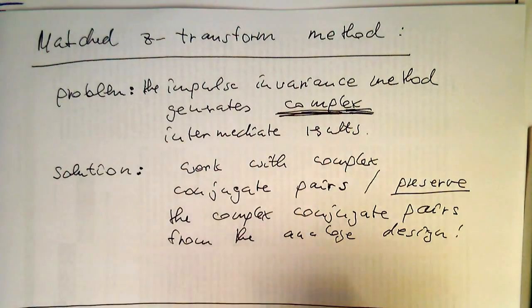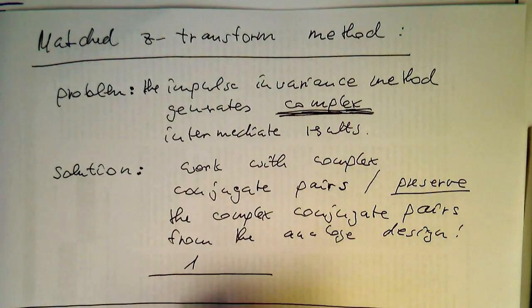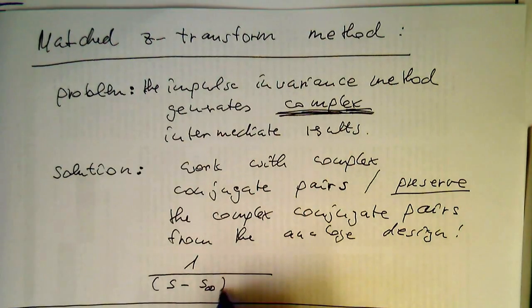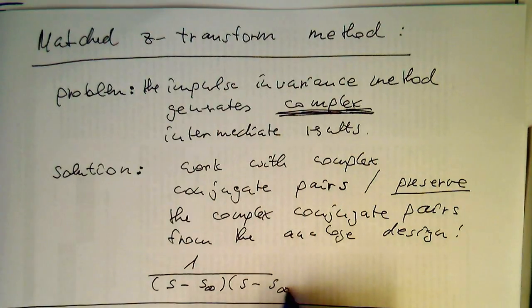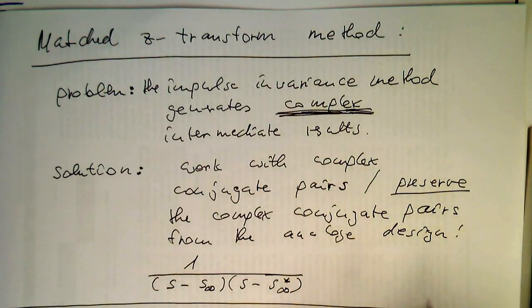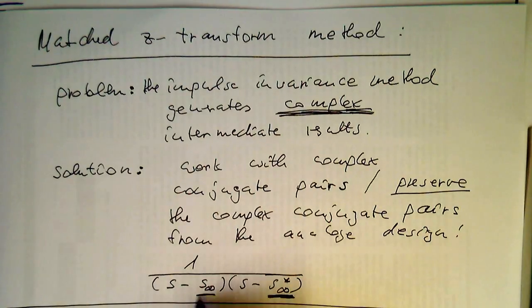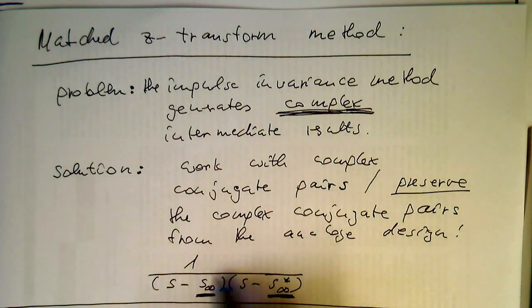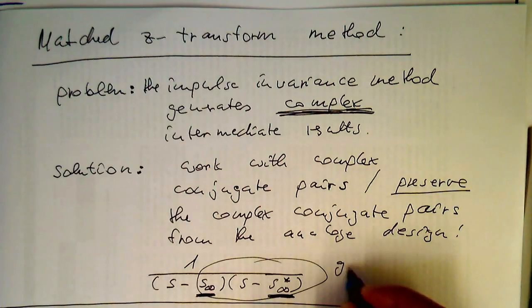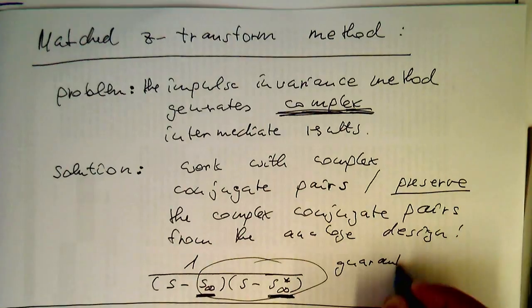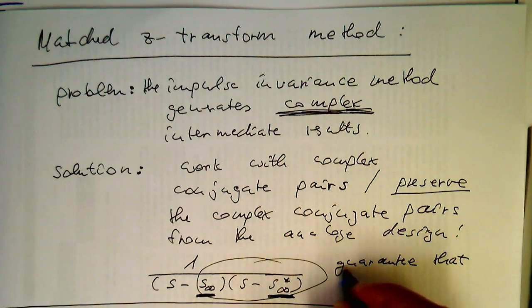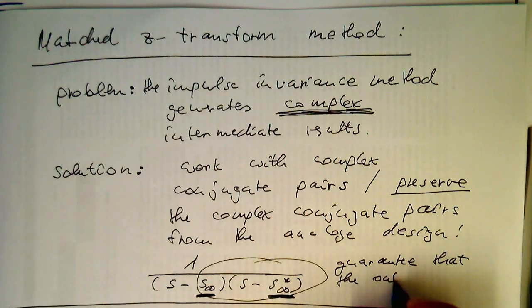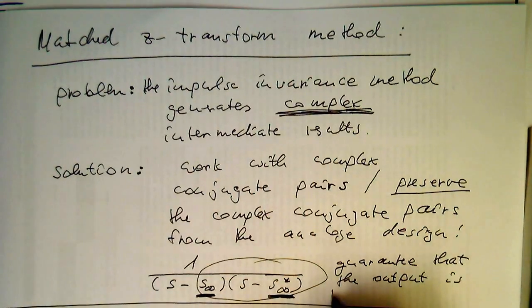Remember our function, which was something like (S minus S infinity) multiplied by (S minus S infinity star). So these complex conjugate pairs guarantee that the output of the filter is real. These matched pairs guarantee that the output is real valued.